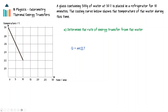Dividing both sides of the relationship by time gives us q over t equals mc delta T divided by t. Q over t is the rate of energy transfer, or the power from the water, and delta T over t is the gradient of the line. The gradient can be found by taking the ratio of the change in temperature to the time for any two points on the graph.